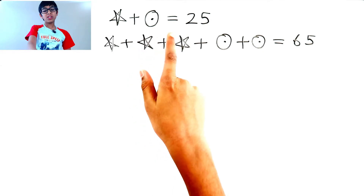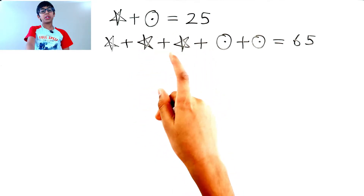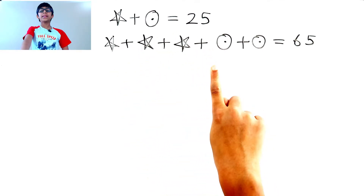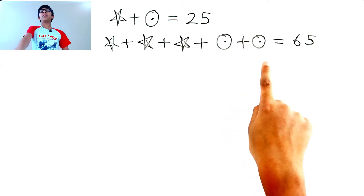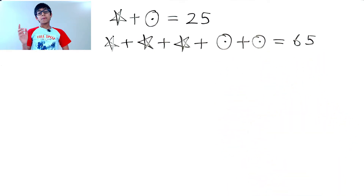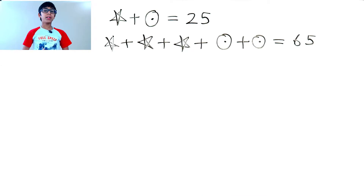Hi guys! In this video, let's do an algebra problem. The problem is: star plus circle equals 25. Star plus star plus star plus circle plus circle equals 65. How much does star equal and how much does circle equal? Let's find out!